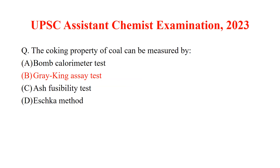The coking property of coal can be measured by the Gray-King assay test. A bomb calorimeter is used to measure calorific value, and ash fusibility is used to test the quality of ash. The answer to this question is option B.